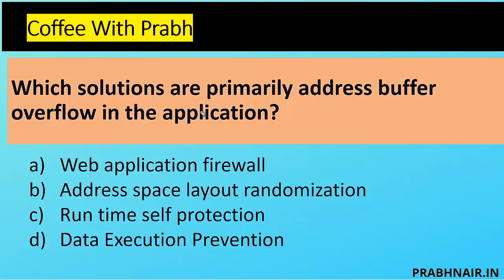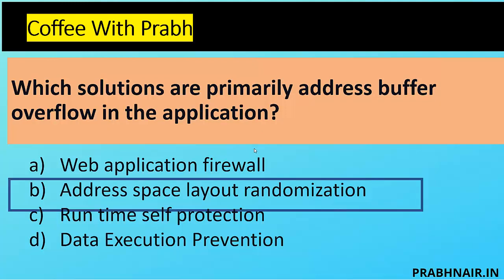ASLR allocates random memory space which is difficult for the attacker to predict, making it a very good control to prevent buffer overflow. Option C, runtime self-protection, is more about testing — it notifies when any modification attempt or change happens in the application. Option D, Data Execution Prevention (DEP), marks memory regions as non-executable and prevents shellcode injected by malware from executing — that's more from a system security point of view, not memory protection. So the answer is B — ASLR is the most effective control for buffer overflow.